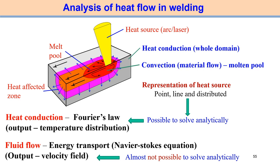The heat source creates a molten pool, a heat affected zone, and a solidified component. Looking at the heat transfer modes, heat conduction occurs throughout the whole workpiece domain. Within the small weld pool, convection occurs — the metal flows from one point to another following certain patterns. So convection is associated within the molten pool, while conduction governs the overall domain.